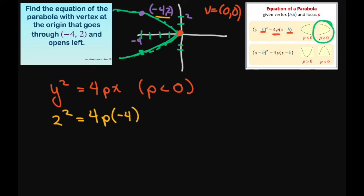Alright, simplifying this we're going to get 4 equals negative 16p, therefore p equals negative 1 fourth. And that's true because p is negative.